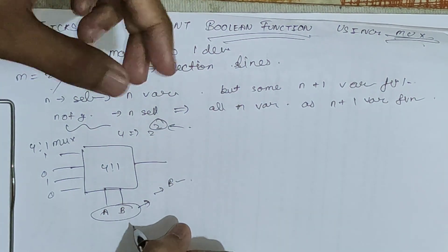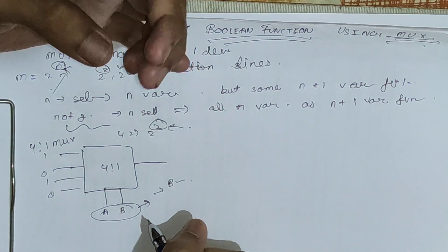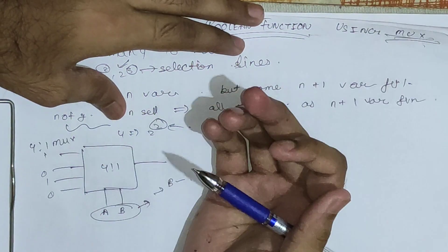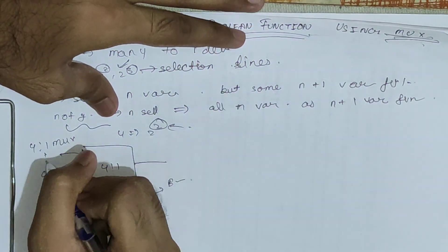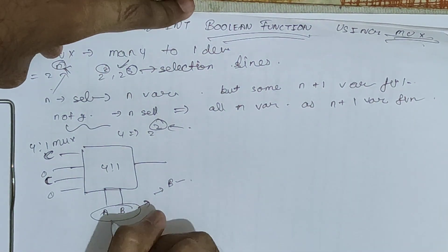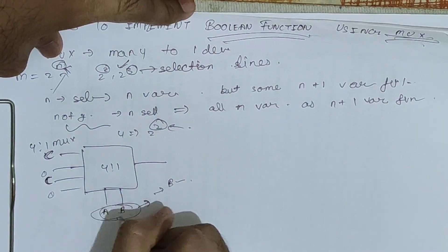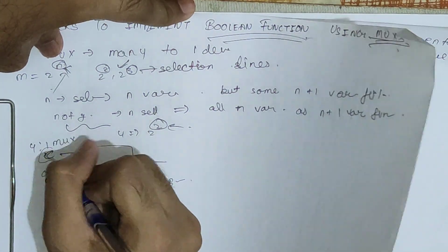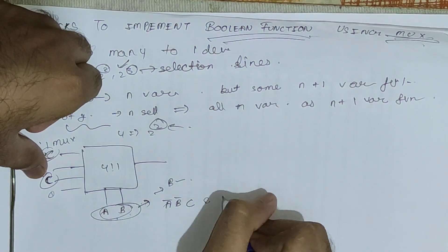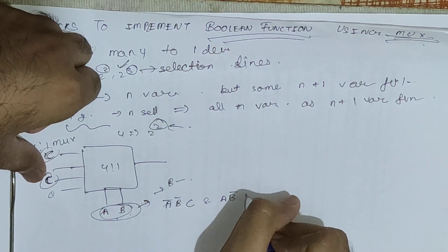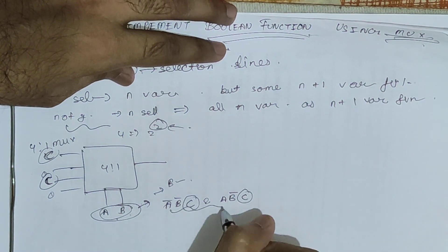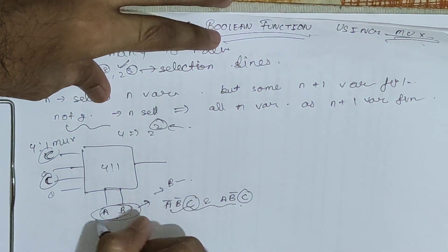And for some 3-variable functions: instead of giving fixed values like 1, 0, 1, 0 at the inputs, we can place a third variable c at those input positions. So with only selection lines, we can implement all 2-variable functions and some 3-variable functions — for example, terms like a-bar·b-bar·c and a·b-bar·c.